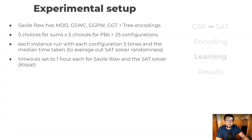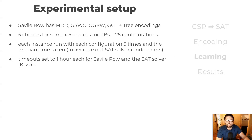All four encodings are implemented in Savile Row, as well as an extra encoding just called Tree. That gives us five choices for how to encode the pseudo-Booleans. It turns out that sums can also be encoded as a pseudo-Boolean constraint with some extra at-most-one constraints. So altogether, that means we can set up 25 configurations. We ran each instance with each of the 25 configurations on our cluster, and we did it five times to average out any variation due to randomness in the SAT solvers.